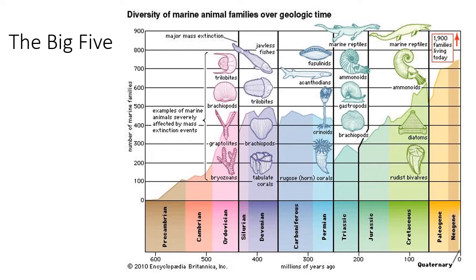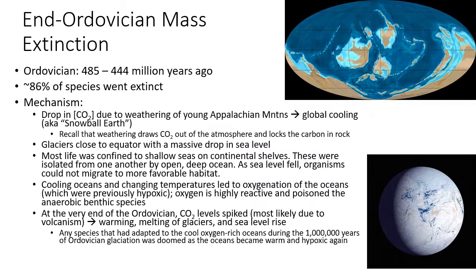Now the Big Five: the End Ordovician, End Devonian, End Permian, Triassic–Jurassic, and Cretaceous–Paleogene. You can see these as the bold spikes on the diagram showing number of marine families over time. Marine families increase steadily until they plummet at each event, then recover and increase again. You don't need to know the time frames, the species that went extinct, the percentages, or even the exact mechanisms. But you should be able to identify those mechanisms and recognize analogs happening today — for example, weathering of rocks drops CO2 levels as CO2 reacts with weathering rock to form inorganic limestone containing carbon.